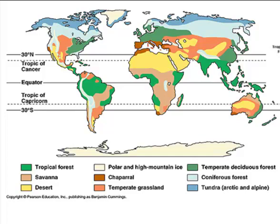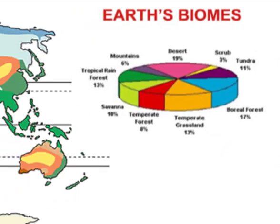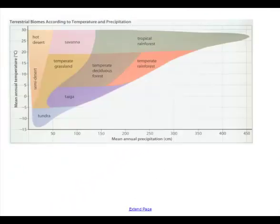These biomes are not equal — they don't all take up the same portion of the planet. Another way to understand biomes is to compare their temperatures versus their precipitation levels.